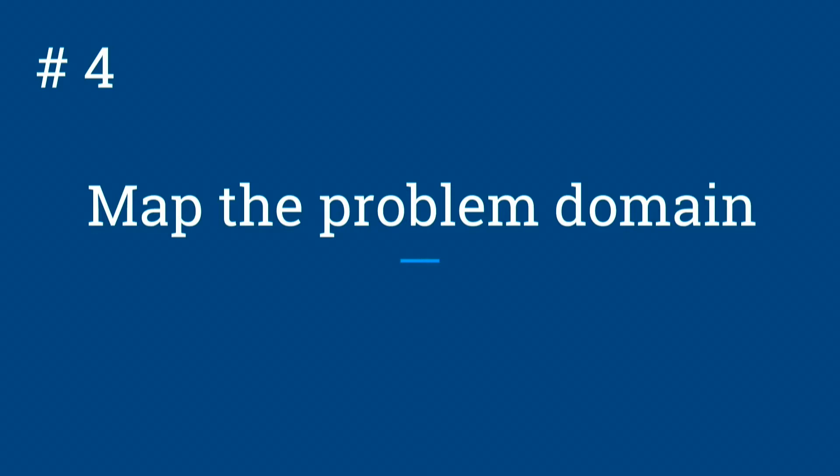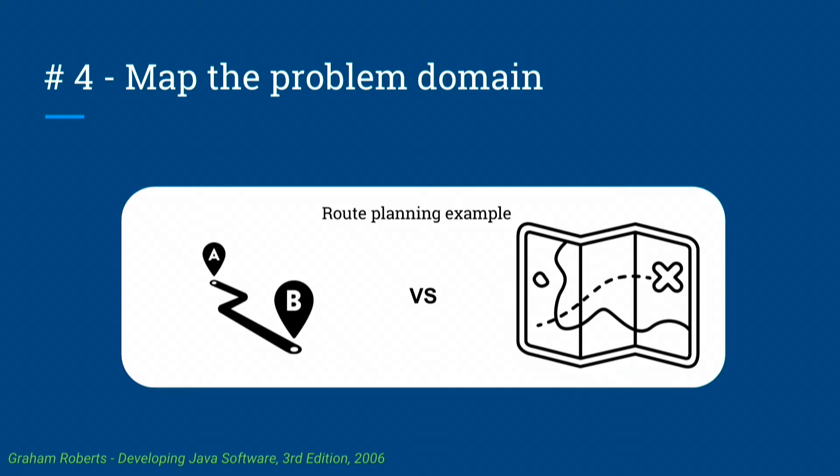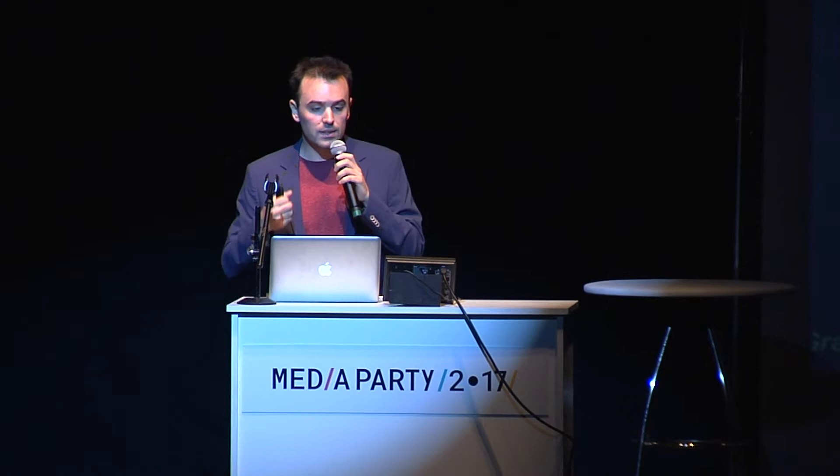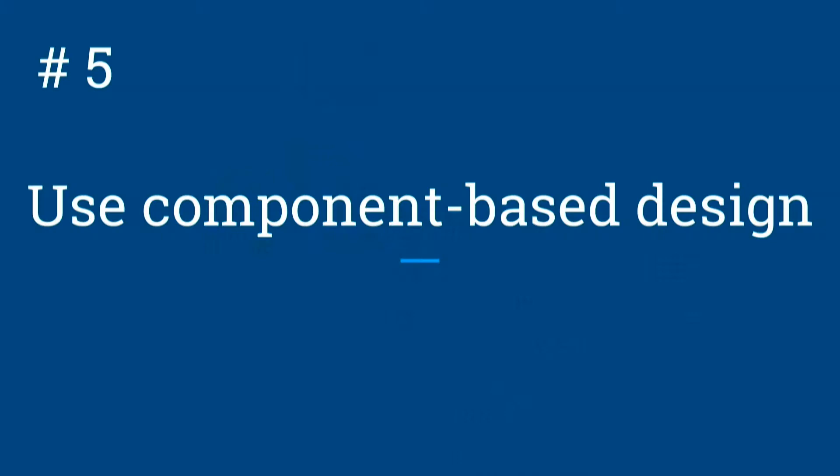An approach that has been quite successful is mapping the problem domain. For example, if you're building a route planning application, instead of just doing one route with a list of instructions, if you build a map as a system and define how you create different strategies for routes, it takes longer to set up but is far more flexible when users query multiple locations. If you write the list every time, it won't scale well as it gets bloated with instructions. Using a components-based design helps make things modular, small, simple, and reusable — so if you build a new product in the same problem domain, you can get up and running much faster.